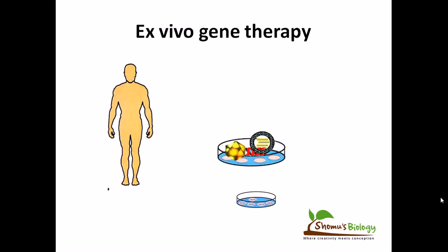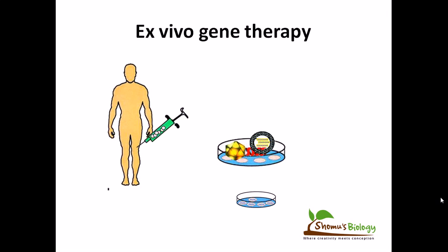Once that sample is ready, we will take it out using a syringe and inject it into the individual, so that the particular DNA segment will go and substitute the actual region inside the body of the individual.